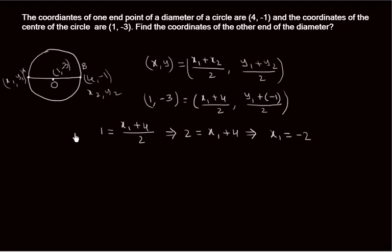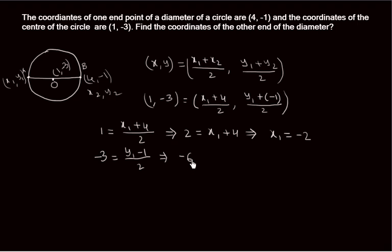Now for the y-coordinates: -3 = (y1 + (-1)) / 2, which gives 2 × (-3) = y1 - 1, so -6 = y1 - 1. Transferring -1 to the other side: y1 = -6 + 1, therefore y1 = -5.